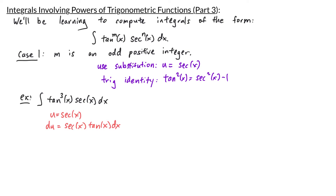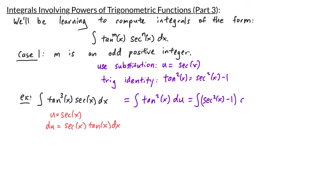When we make the substitution, we can replace one of the tangents, secant, and dx with du, but that still leaves us with tangent squared. So making the substitution, we have the integral of tangent squared of x du. This is where we'll use the trig identity — we'll rewrite tangent squared of x as secant squared of x minus 1, and then du.